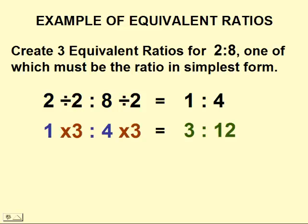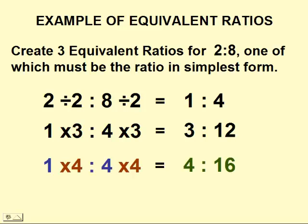Now, if we take that reduced ratio, 1 to 4, multiply both sides by 3, we can get another equivalent ratio. We would get 3 to 12. 3 to 12 would be the same as 2 to 8, would be the same as 1 to 4. And we can continue this process on for as long as we want.